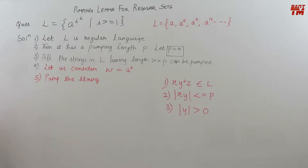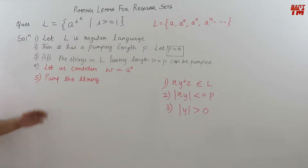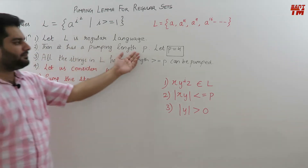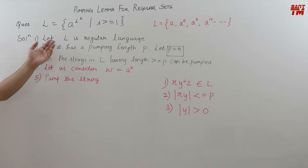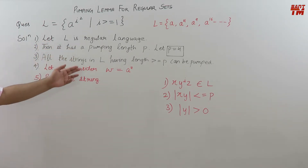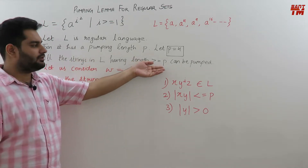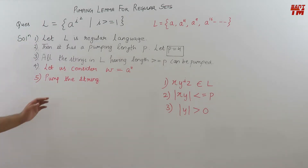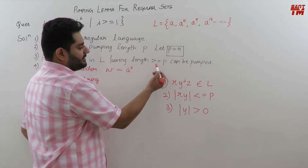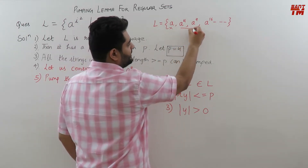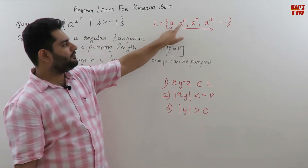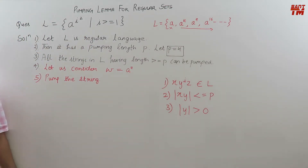So using the pumping lemma we have to prove this language to be not regular. The first step is we will assume that the language is regular. If L is a regular language, it will have a pumping length P — we have assumed the value for pumping length to be 4. All the strings in that language that have length greater than or equal to P, that means greater than or equal to 4, can be pumped. So a⁴, a⁹, a¹⁶ and so on can be pumped.